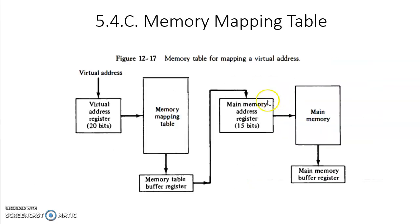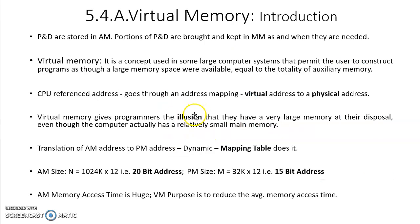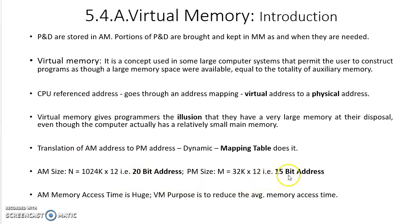In order to make this virtual memory concept work, you need this hardware and the main memory mapping table — it is very important. The translation of auxiliary memory address into physical memory address is called mapping, similar to our cache memory mapping — conversion of main memory address into cache memory address. Mapping is nothing but translation of address from a big address to a small address: there, 15-bit to 9-bit; here, 20-bit to 15-bit.